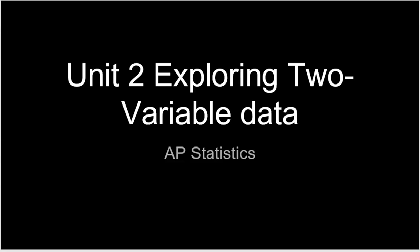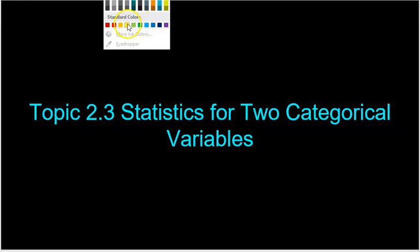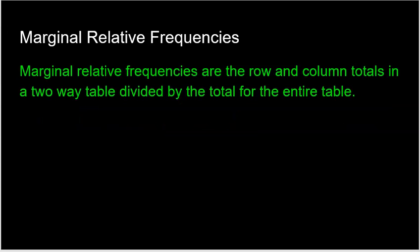Welcome to Unit 2: Exploring Two-Variable Data for AP Statistics. In this video we are going to cover Topic 2.3: Statistics for Two Categorical Variables. We'll look at numbers, statistics, data — a summary of what we see in a categorical variable table.